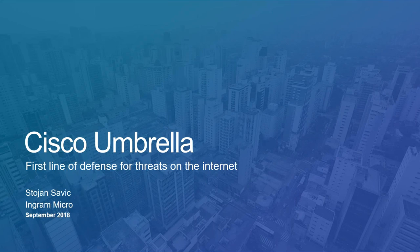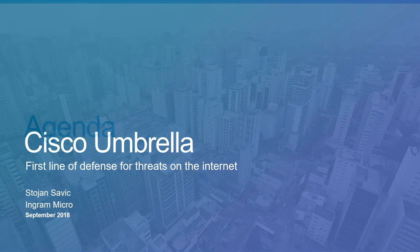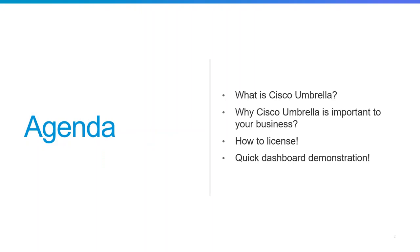What we'll cover off today is Cisco Umbrella, the first line of defence for threats on the internet. We'll cover what is Cisco Umbrella, why it's important to your business, a quick one on how to licence it, a quick demonstration of the dashboard, and then we'll quickly go through some of our promos here at Ingram Micro and a bit about the cloud marketplace.